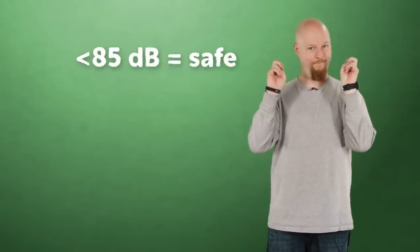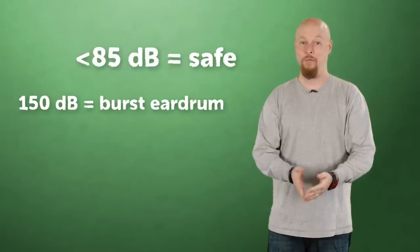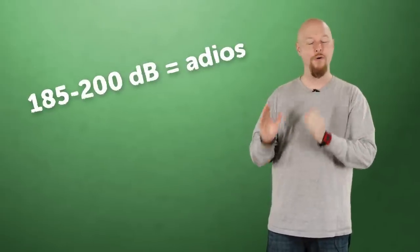Anything below 85 decibels is thought to be safe. But at 150 decibels, your eardrums burst like with the jet or shotgun. And at 200 decibels, your lungs will rupture and likely kill you. That's right, the threshold for death by sound is somewhere between 185 and 200 decibels. That is, if your lungs don't burst first from the increased air pressure caused by acoustic energy.